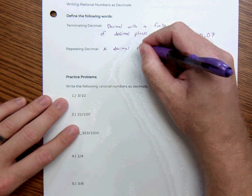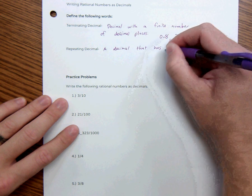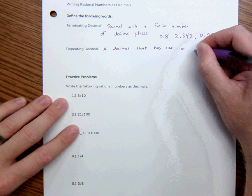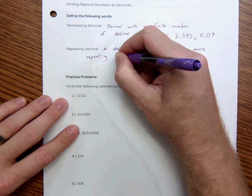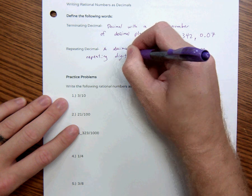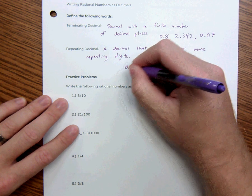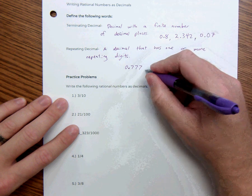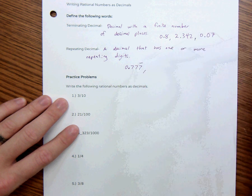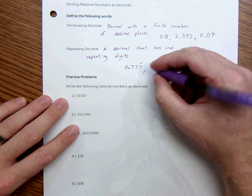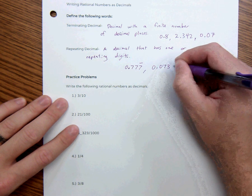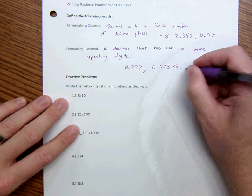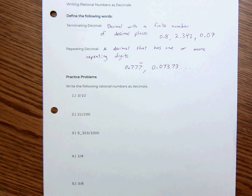And a repeating decimal is a decimal that has one or more repeating digits. So an example of this was something like 0.777 repeating. The way we say that is it goes on forever and we'll put a bar on top of it. We could say 0.07373 and it's just going to repeat that whatever it's repeating on and on and on again forever.